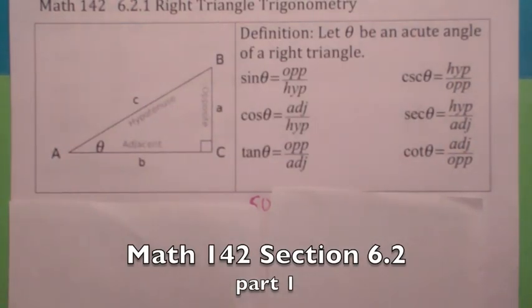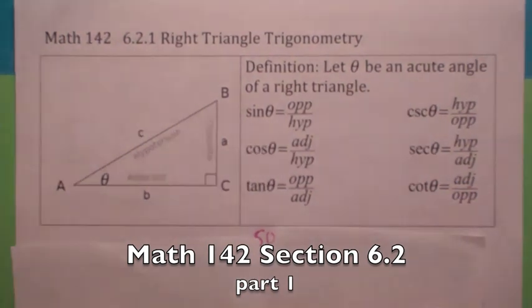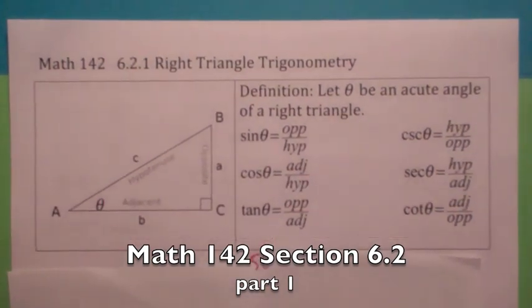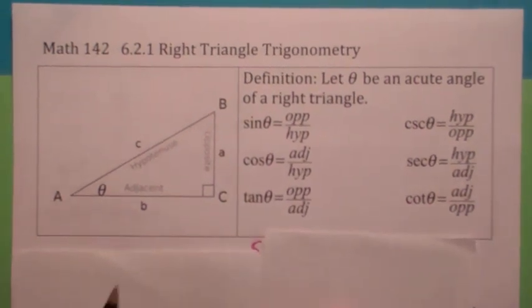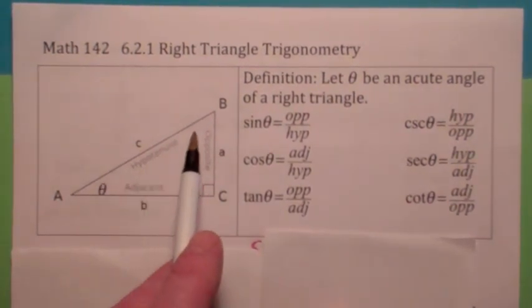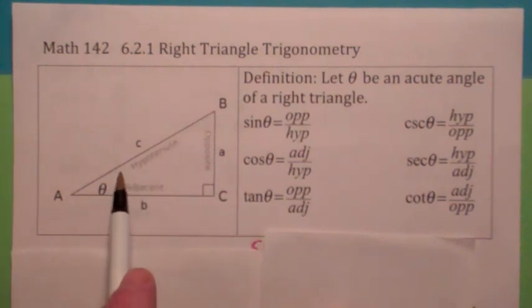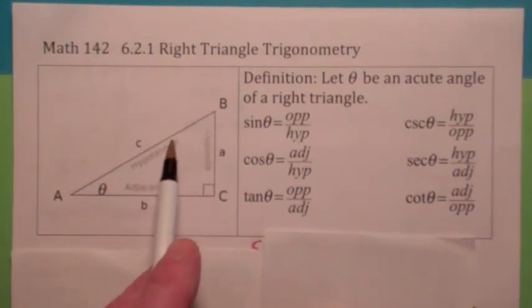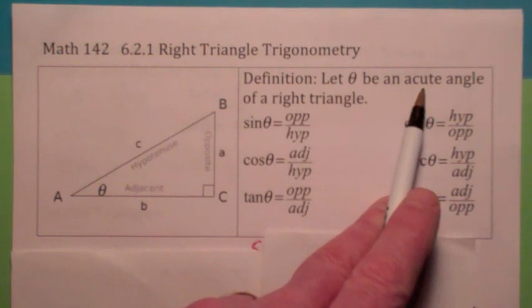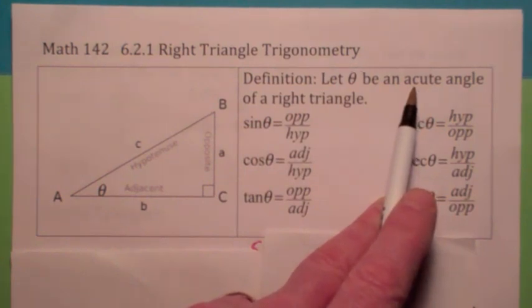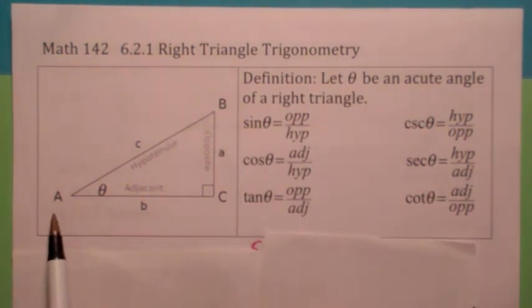We're finally ready to define the trigonometric functions of right triangles. I'm going pretty fast in this video because there's a lot to cover here in 6.2. If you've got a right triangle, that just means it has a 90 degree angle. That means these other two angles have to add up to 90. We call these other two angles complementary angles. They also have to be acute angles — that just means each of them is less than 90 degrees.